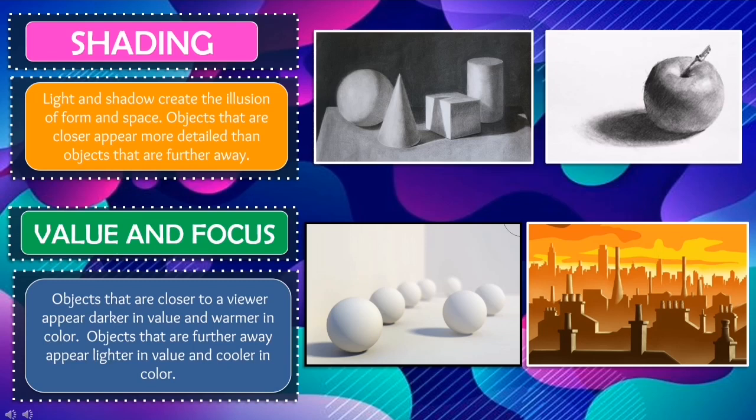Value and focus: objects that are closer to a viewer appear darker in value and warmer in color. Objects that are further away appear lighter in value and cooler in color.